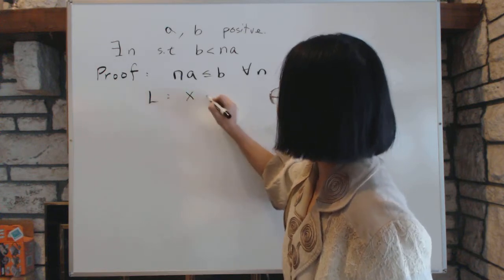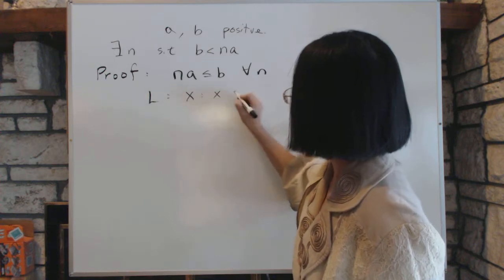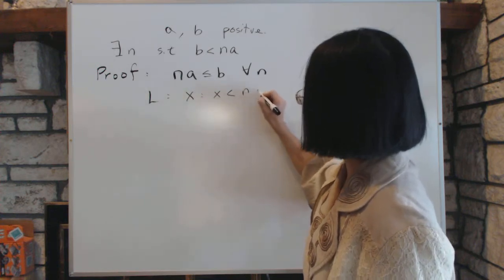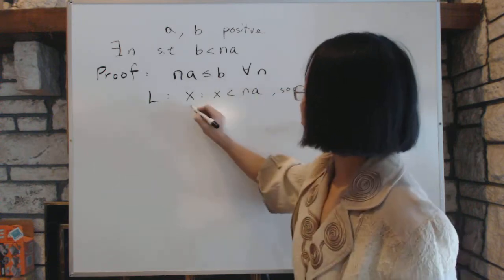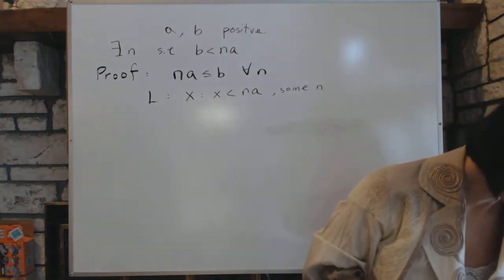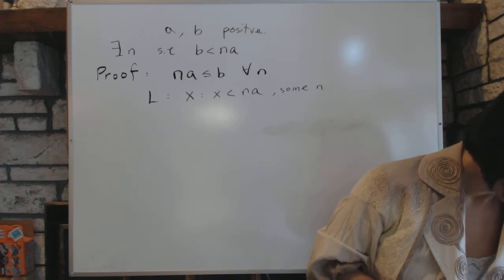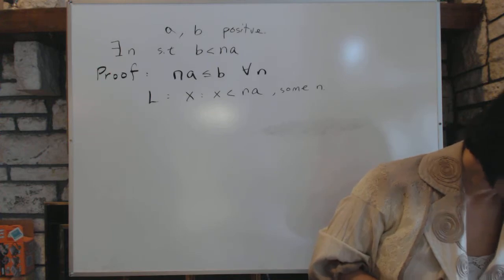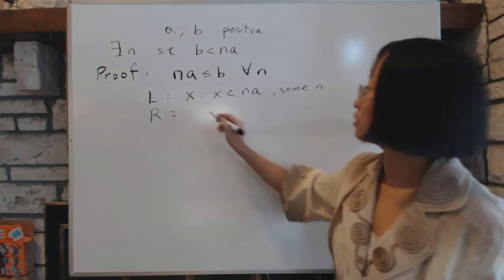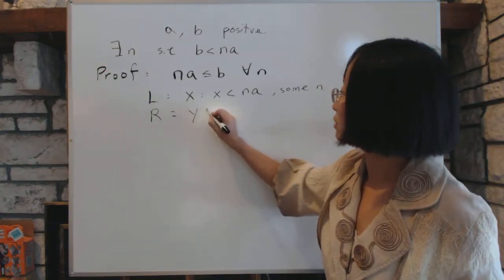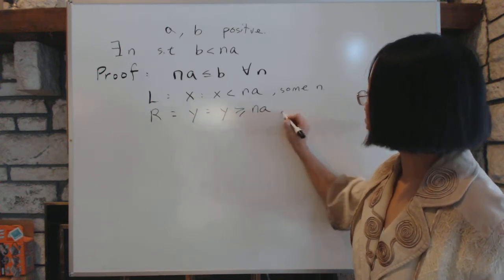And then R will consist of all the numbers that is not in L. In other words, R consists of numbers y such that y is bigger than or equal to NA, and that's for all N.